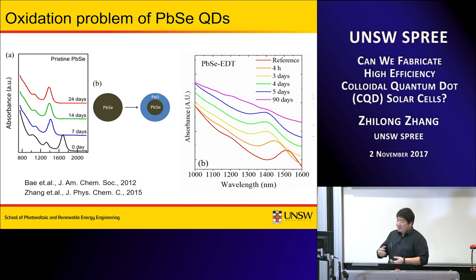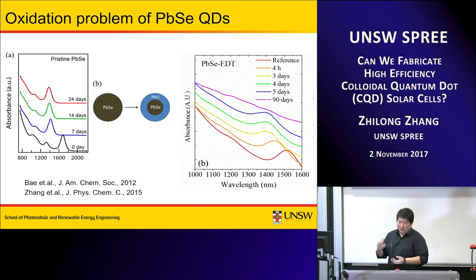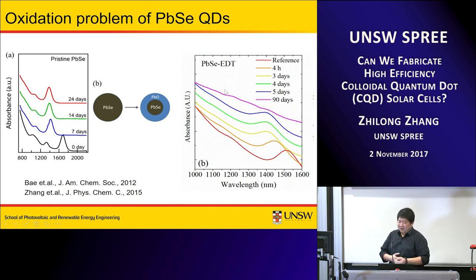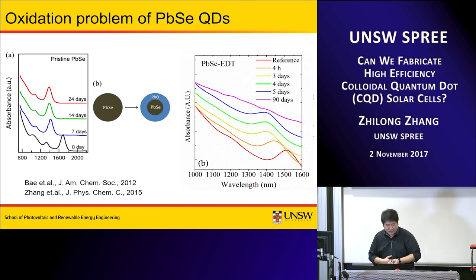When I started making lead selenide quantum dots I found a big problem: oxidation. The absorption spectra of the lead selenide ink show a very obvious blue shift over time, because oxidation effectively shrinks the size of the dots, resulting in higher levels of quantum confinement. This is a big problem because oxidation can create a lot of defects. This problem is even more severe in lead selenide quantum dot thin films, where the blue shift occurs within hours of exposure to air.